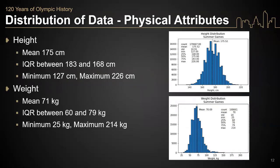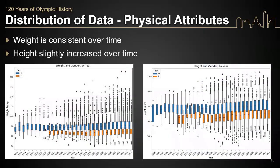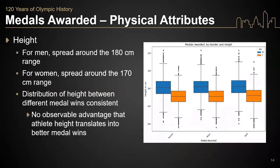Taking a look at the distribution of physical attributes, the mean height of all athletes is around 175 centimeters, while the mean weight of all athletes is around 71 kilograms. Looking at physical attributes over time, you can see that weight has remained consistent; however, as you move through the Olympic years, height is slowly increasing. For medals awarded, looking at which medal each gender won and their height — for men the spread around medal winners is around 180 centimeters, and for women it's around 170.